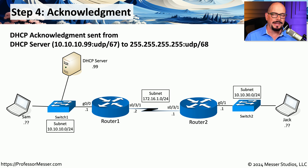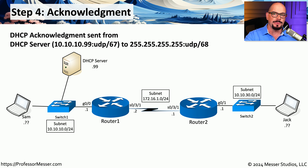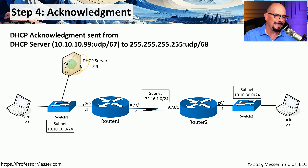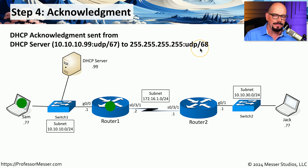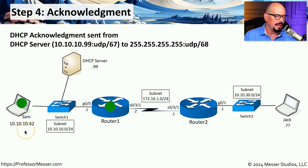The last step is an important one because it locks in that IP address on Sam's device. This is sent as an acknowledgement from the DHCP server, acknowledging that that IP address has now been assigned to Sam's machine, and that IP address won't be assigned to anyone else for the duration of that lease. This is sent directly from the DHCP server — in this case 10.10.10.99 — as a broadcast to 255.255.255.255 over UDP port 68. Now that Sam has received that acknowledgement, the IP address can finally be updated on Sam's computer, and Sam has been assigned 10.10.10.42.